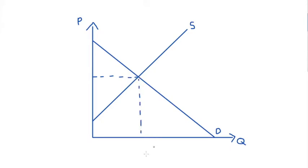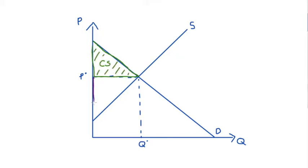In our market without intervention the price would be p* and the quantity traded would be q*. Our consumer surplus would be the area below the demand curve above the price, and our producer surplus would be the area above the supply curve below the price.